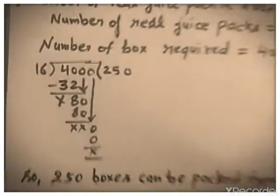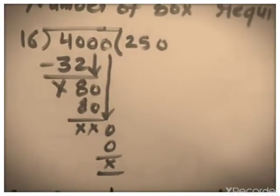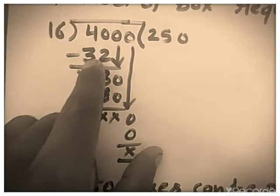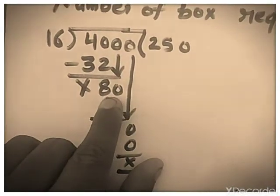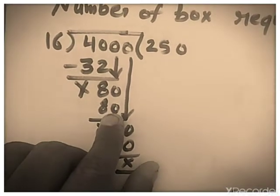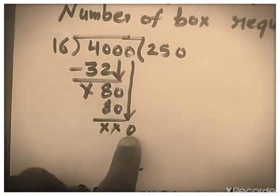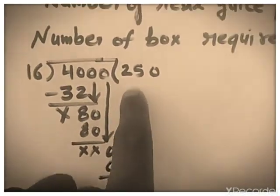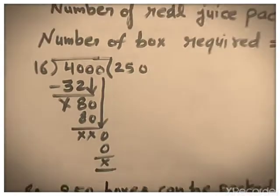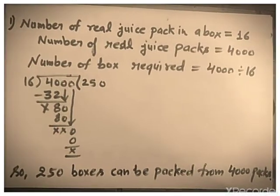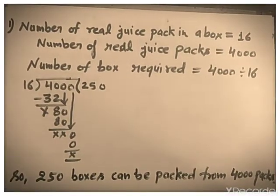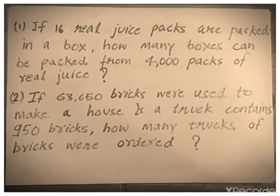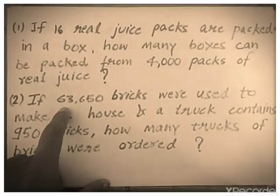So divide four thousand by sixteen. You know the table of sixteen: 16 × 2 is 32; 40 minus 32 is 8 — take the zero, it becomes 80; 16 × 5 are 80. Now this zero is left — take the zero; 16 × 0 is 0. So we get 250 as the quotient. Therefore, 250 boxes can be packed from four thousand packs of Real Juice.